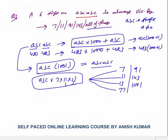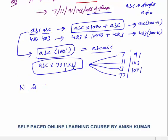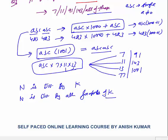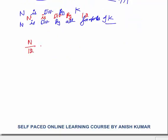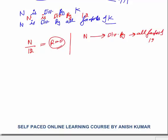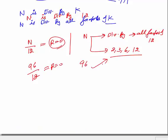A new concept we learned here: if a number n is divisible by k, then n is divisible by all factors of k. This is very important. For example, if n is divisible by 12 (remainder 0), then n is always divisible by 2, 3, 6, and 12 — all factors of 12. For instance, 96 is divisible by 12, so it's also divisible by 2, 3, 6, and 12.